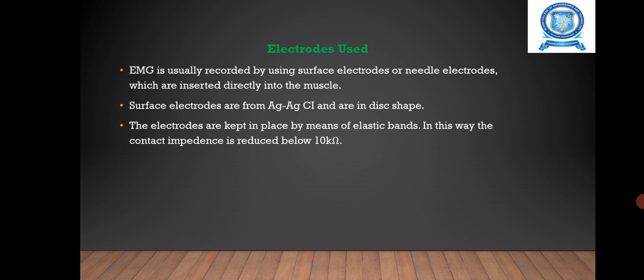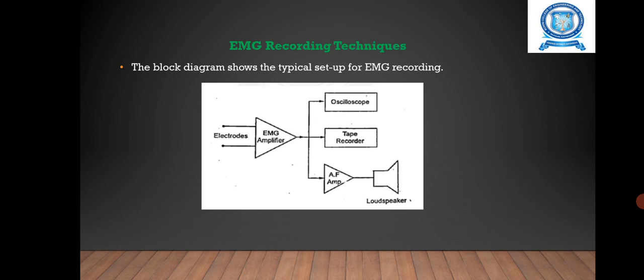The surface electrodes are from silver to silver chloride and are in disc shape. The surface of the skin is cleaned and electrode paste is applied. The electrodes are kept in place by means of elastic bands. In this way, the contact impedance is reduced below 10 kilo ohm.